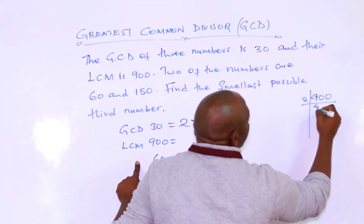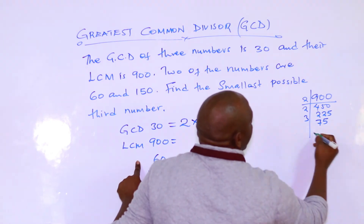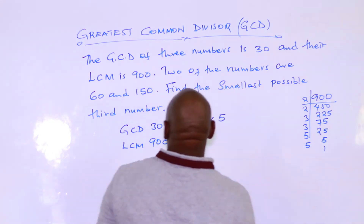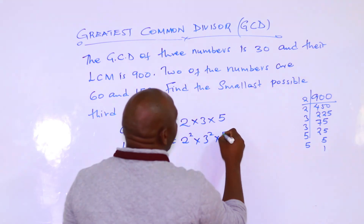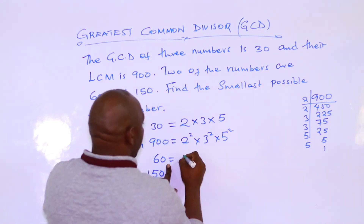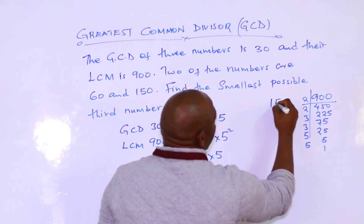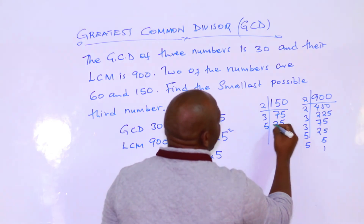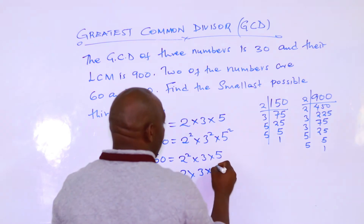So 900 equals 2 to the power 2 times 3 to the power 2 times 5 to the power 2. The first number, 60, is 2 to the power 2 times 3 times 5. And 150 factorizes as: by 2: 75, by 3: 25, by 5: 5, by 5: 1. So 150 equals 2 times 3 times 5 squared.